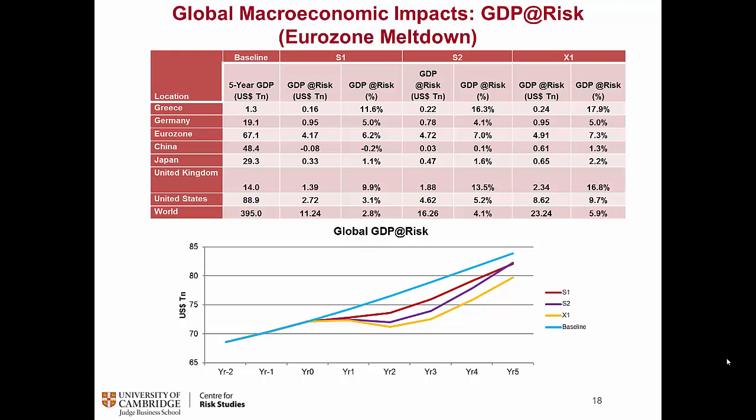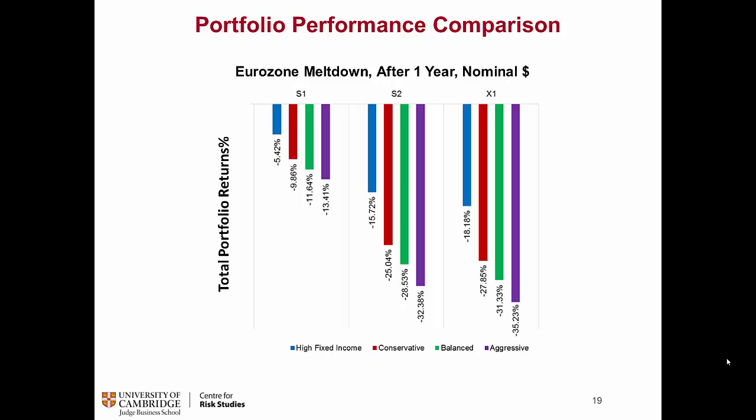The final macroeconomic impacts show that the GDP at Risk measure is quite long-term compared to previous scenarios — the effect remains for more than three to four years, which is quite significant. With more severe scenarios, it is higher. Just to be consistent, one slide on portfolio impacts shows effects are somewhat differentiated across different portfolios, but most are affected by this scenario. Thanks.